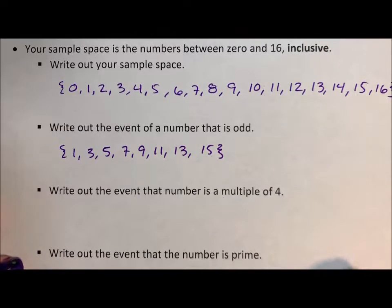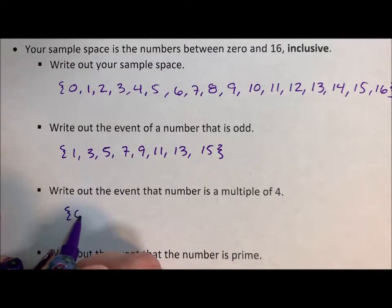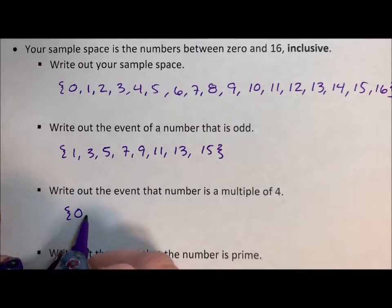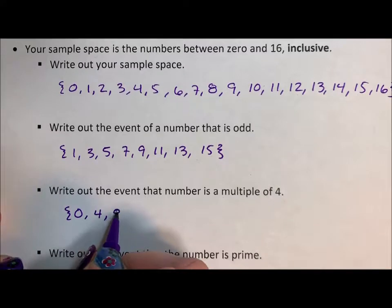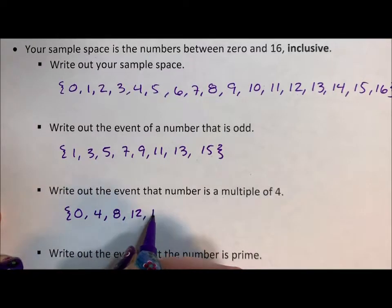Write out the event that the number is a multiple of four. Zero is a multiple of four, so: {0, 4, 8, 12, 16}.